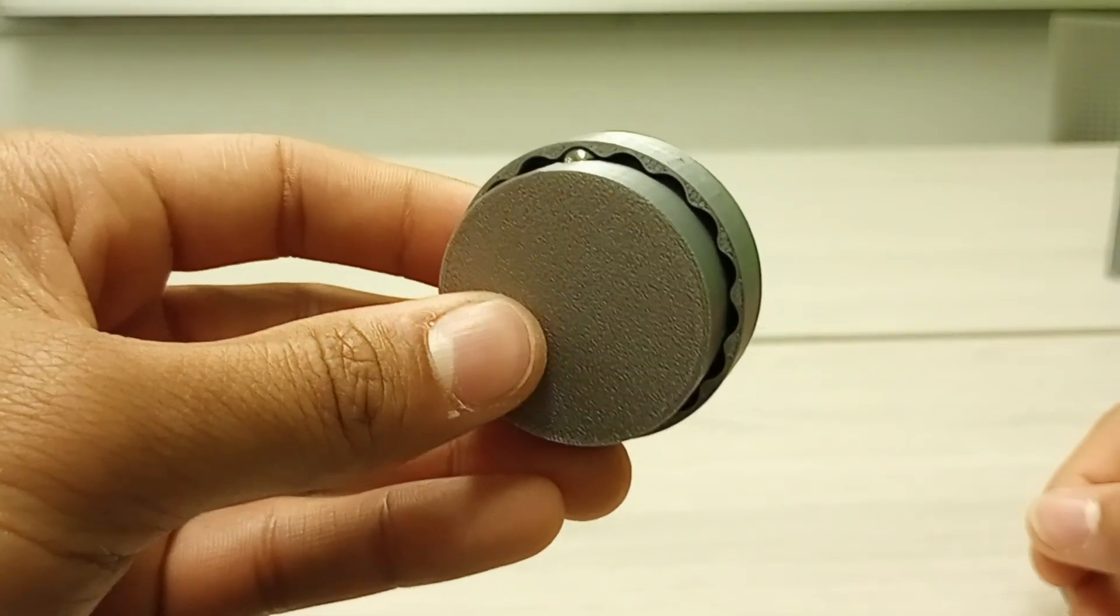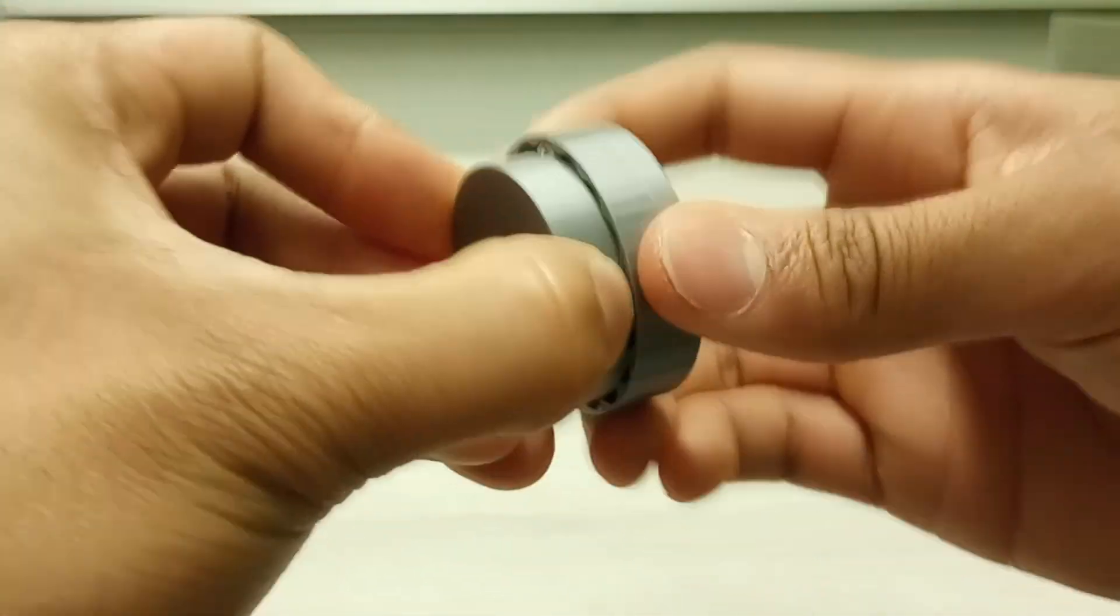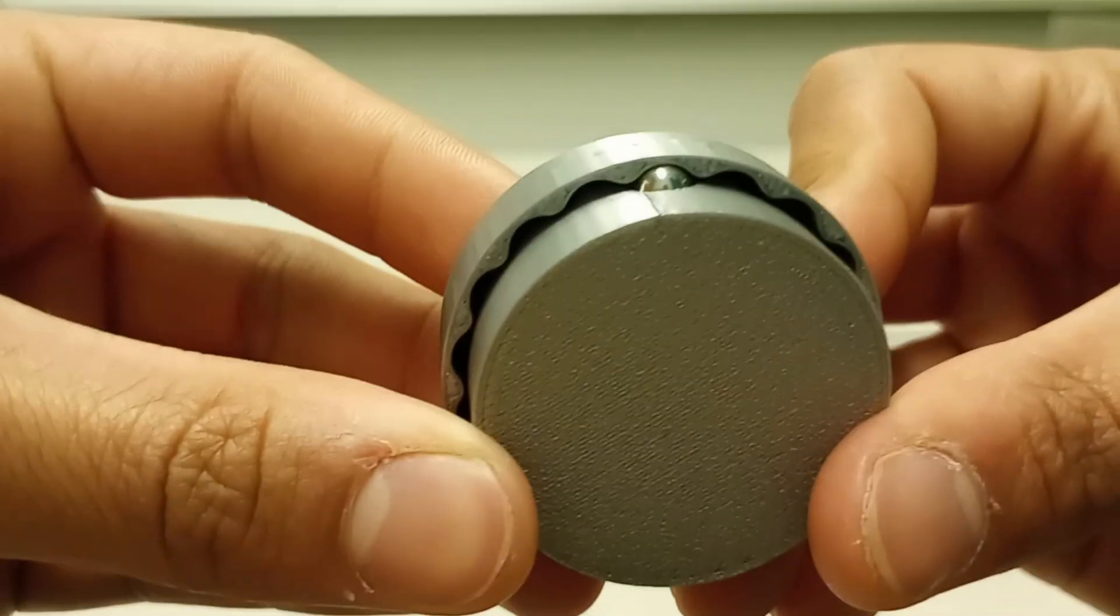However, if you're designing a device that needs to incrementally rotate in the clockwise and counterclockwise direction, then I recommend that you look at this ball detent mechanism.